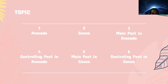The topics of the presentation are: number one, avocado, and cocoa; number three, main pests in avocado; number four, controlling pests in avocado; number five, main pests in cocoa; number six, controlling pests in cocoa.